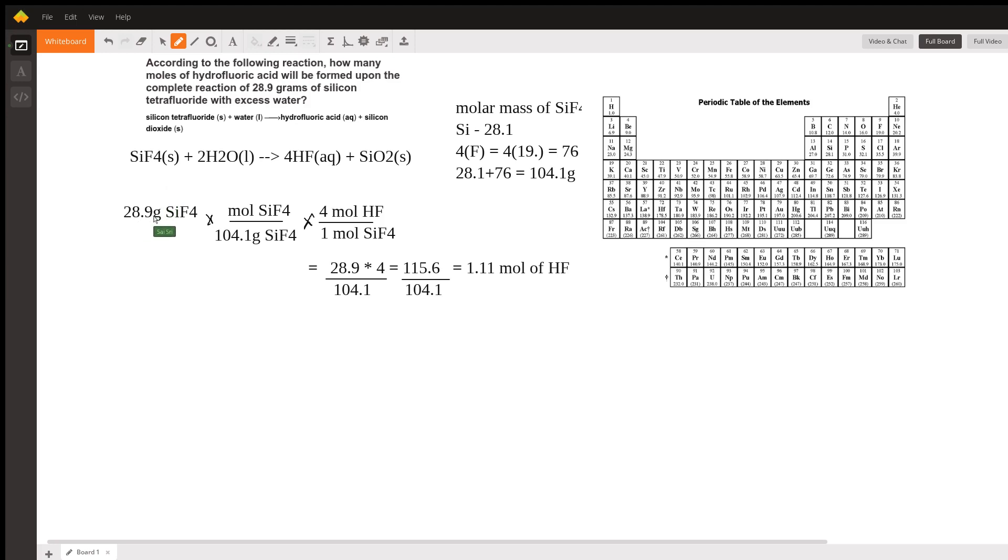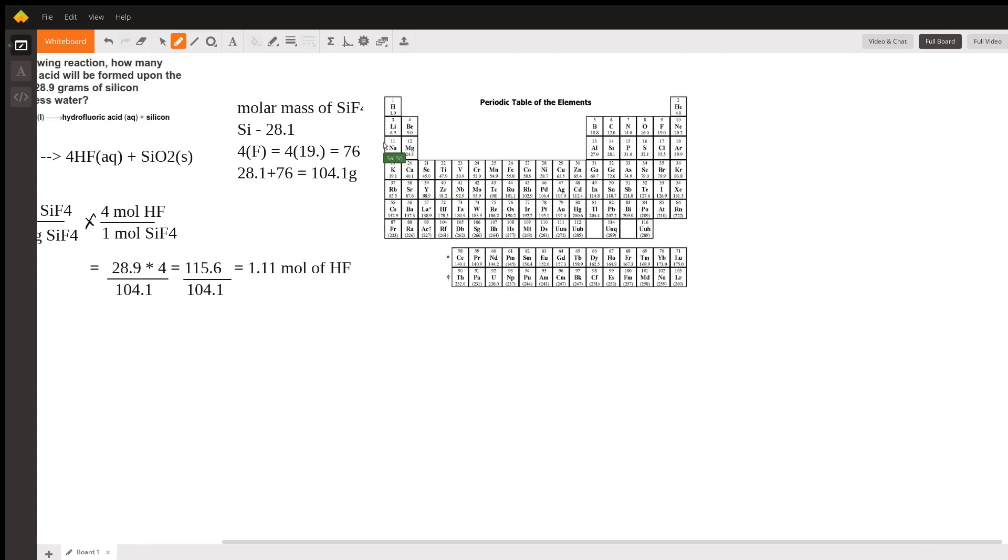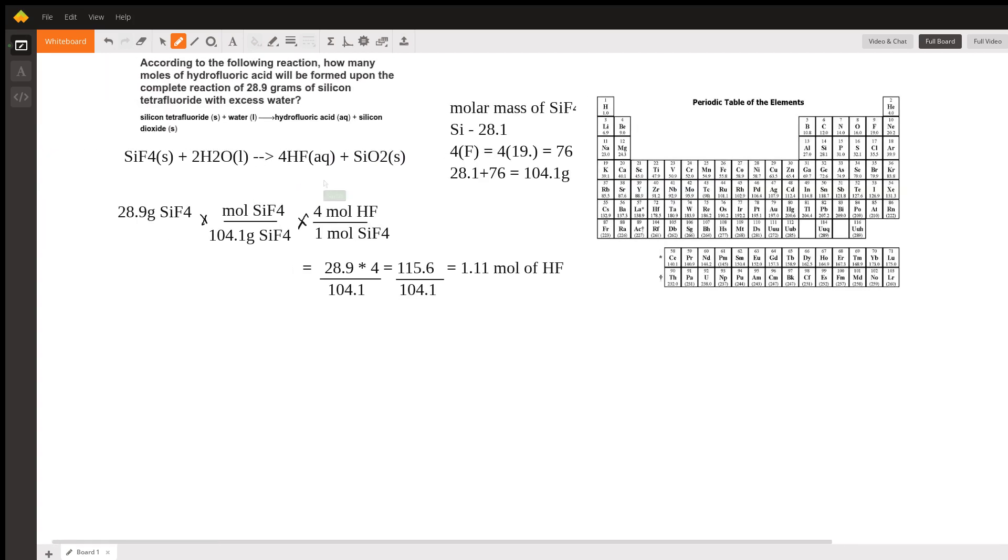So I take 28.9 grams of SiF4, and using dimensional analysis, I convert from grams of SiF4 to moles using SiF4's molar mass. I found that using the periodic table over here, Si is 28.1, four fluorines each having a molar mass of 19 grams per mole, so 76. Add them up, and the molar mass is 104.1.